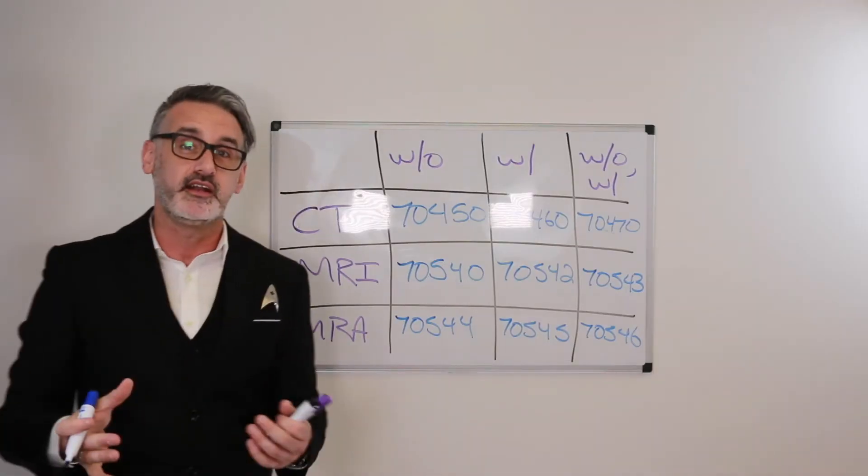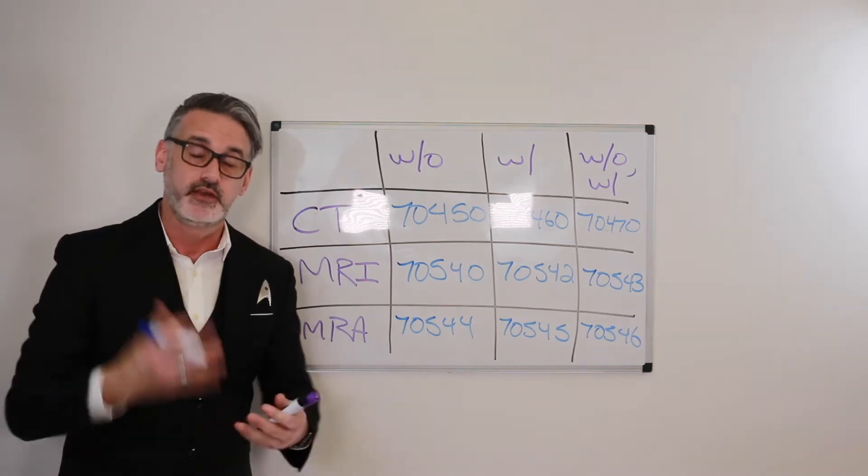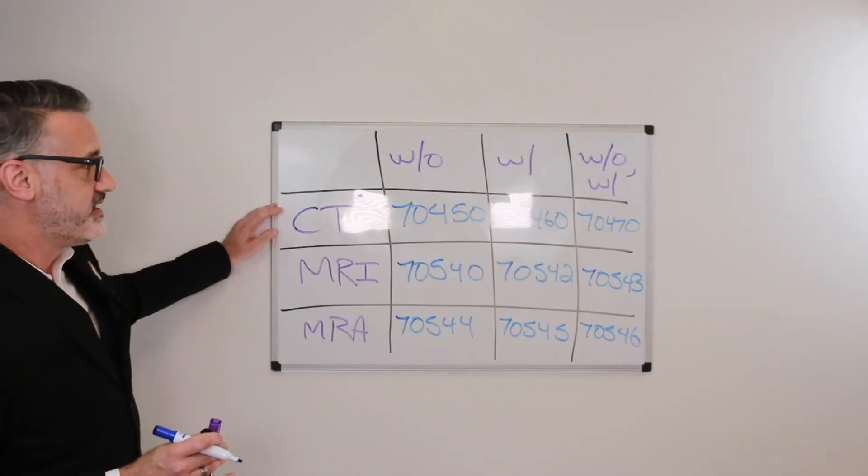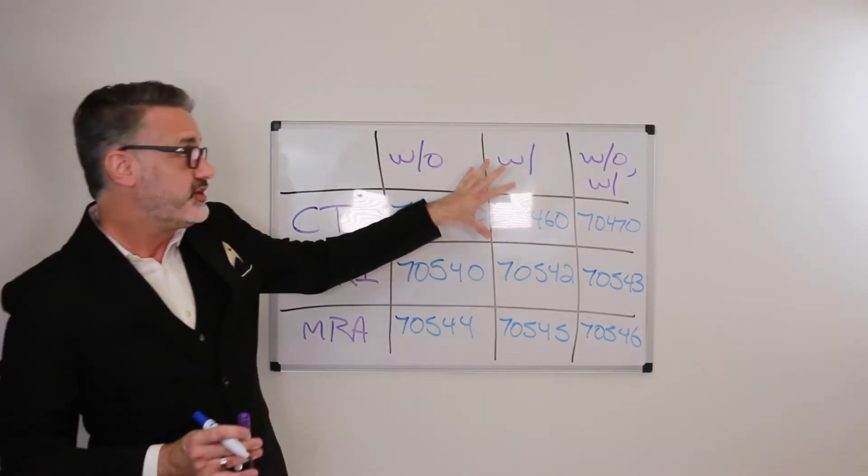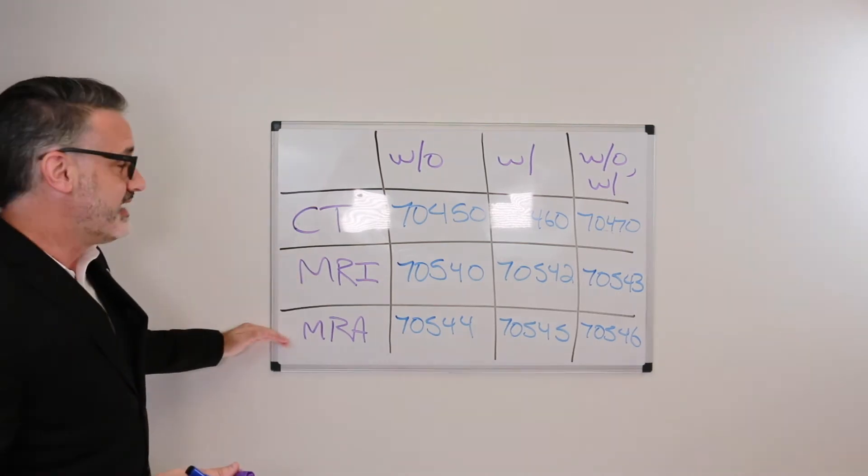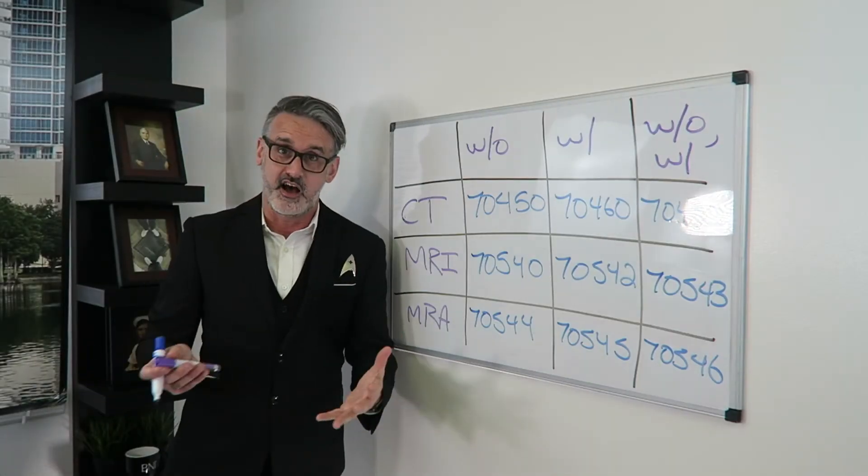So, as you can see here, I simply just chose the location for the head or the face, that every CPT option has without contrast, with, and the combination without, followed by with. Same thing for the CTs, MRIs, and MRAs, no matter where they're at on the body.